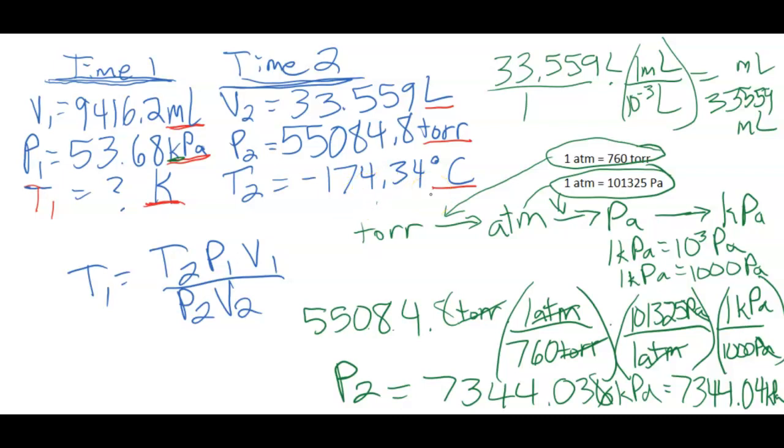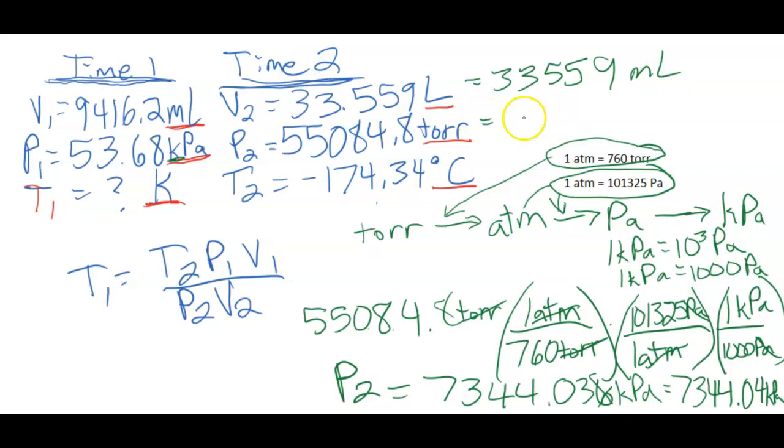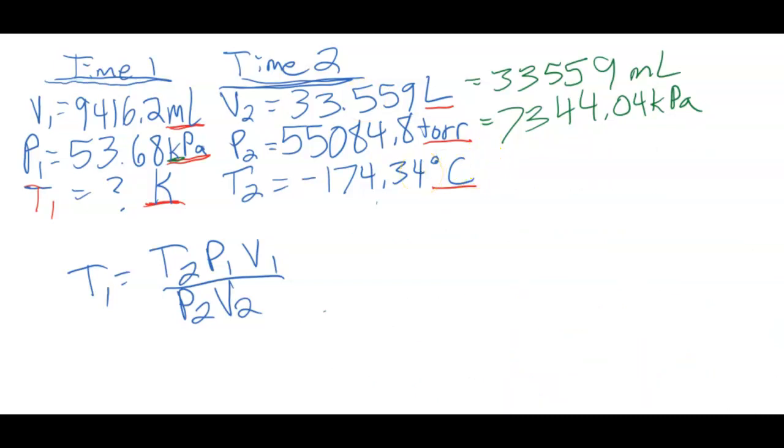Now I still need to do my T2. Just to make sure we have everything on the same page, I'm going to just erase some things up here. So we have 33,559 milliliters. This is 7,344.04 kilopascals. For the temperature, let's take a look at how we convert that from our equation sheet. Or if you've memorized, we add 273.15 to get from Celsius to Kelvin. So notice this is a negative, so be careful about adding a negative to a positive. I'm going to do my math on this. So I get 98.81 Kelvin.